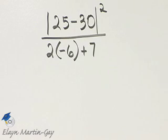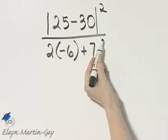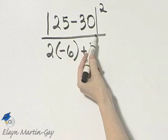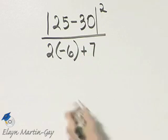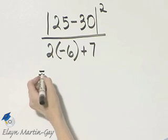Let's simplify this expression. We can think of the fraction bar as a grouping symbol, and we'll evaluate in the numerator and the denominator separately. So let's look at each separately.